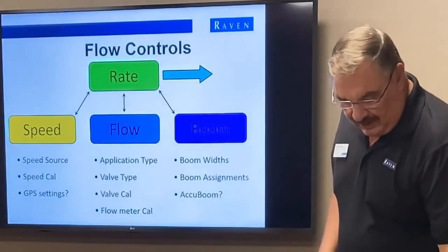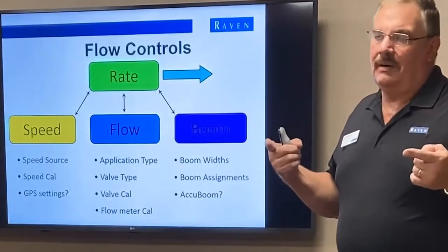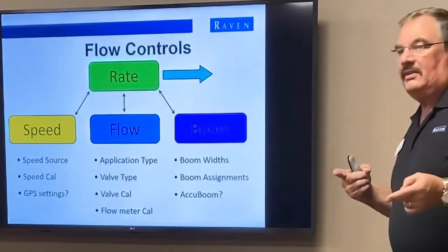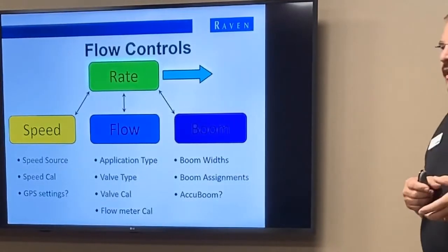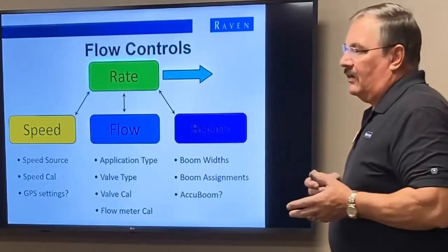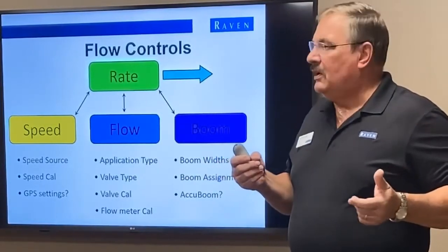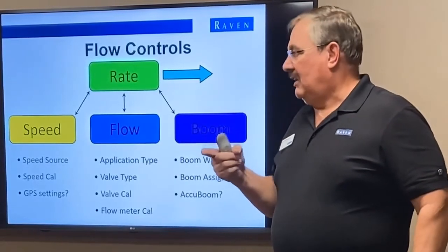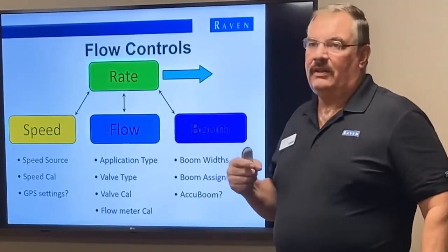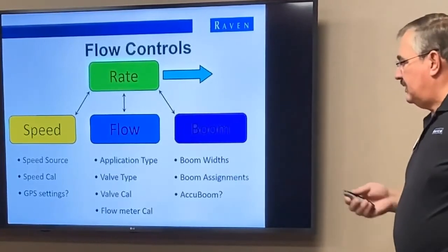Finally, there's the flow meter calibration. Similar to the GPS, the flow meter counts by pulses, so we have to have a calibration number to know how many pulses it counts to read the flow correctly. For example, if we're running 100 gallons per minute through that flow meter, we have to know it's counting exactly 100 gallons. That's what the meter cal does — it counts those pulses.